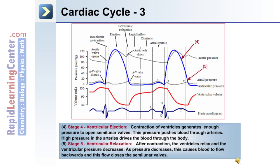Stage 4 is ventricular ejection. Contraction of the ventricles generates enough pressure to open the semilunar valves. This pressure pushes blood through the arteries. High pressure in the arteries drives the blood through the body.